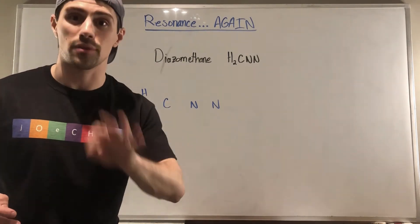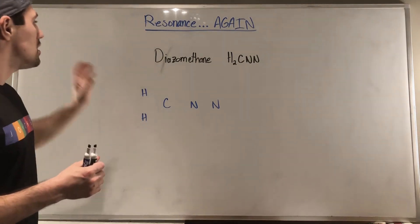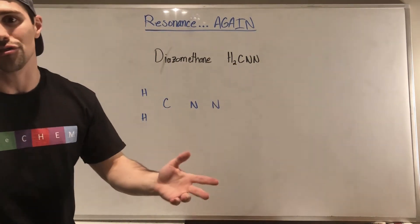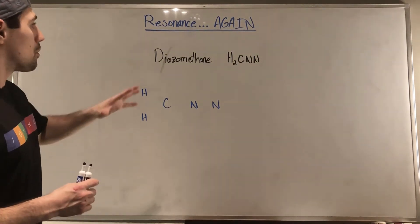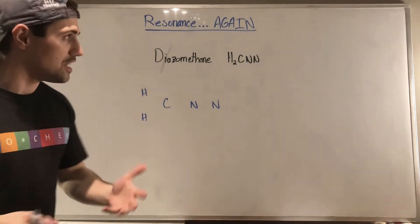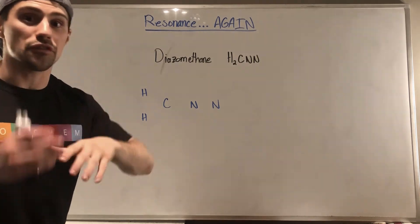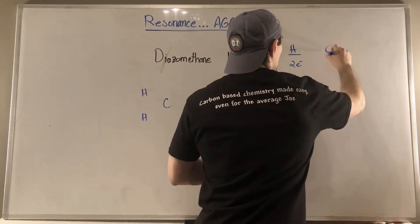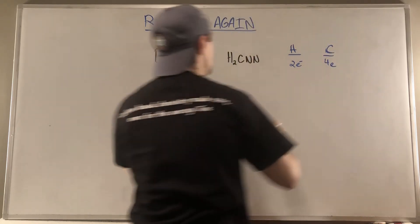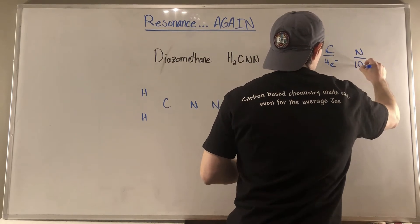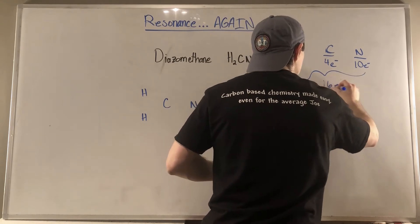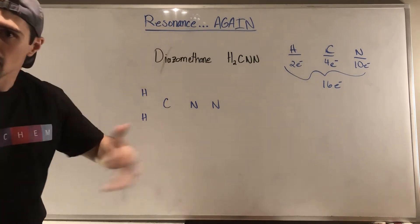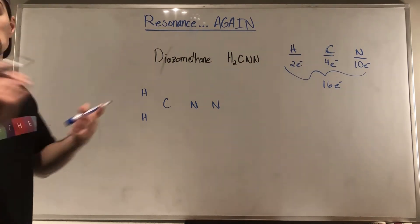Let's rip this last example and look at diazomethane. It's just a common name for a structure — don't worry about memorizing it. We need to draw the Lewis dot structure. Counting electrons: from hydrogen we get two electrons because there are two hydrogens; carbon gives four; two nitrogens from the fifth column give ten electrons. So our grand total is sixteen electrons — that's our budget. The skeleton has carbon bonded to two hydrogens and two nitrogens in a chain.